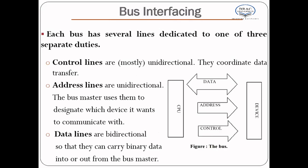Address lines are unidirectional. The bus master uses them to designate which device it wants to communicate and in which memory location. Data lines are bidirectional so that they can carry binary data into or out from the bus master.